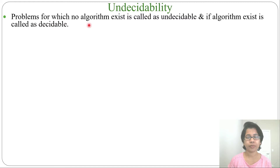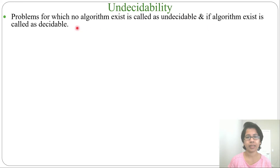The problem for which no algorithm exists is called undecidable. If an algorithm exists, then it is called decidable. There are lots of problems in TOC for which no algorithm exists — these are undecidable problems.